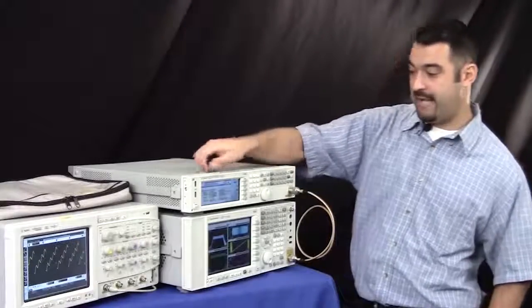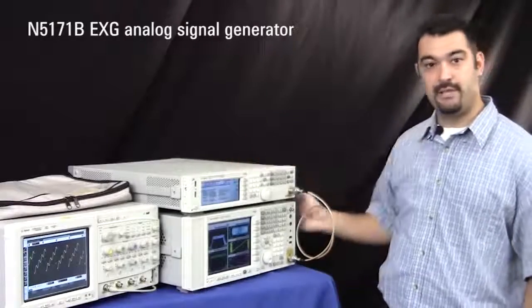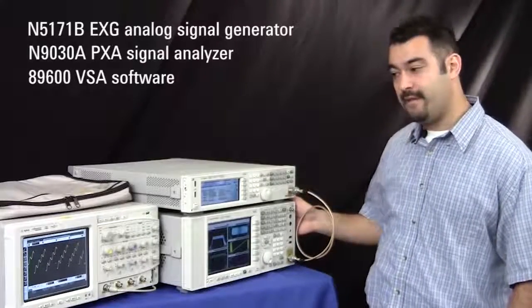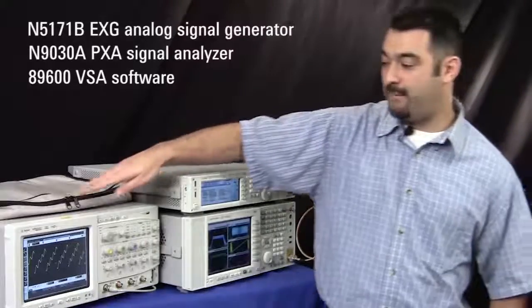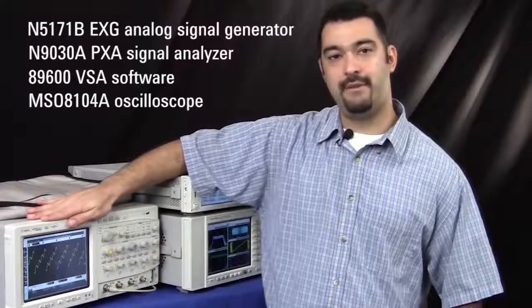In this setup today, we're going to be using the Agilent EXG analog signal generator. And to view the signal, we're going to be using the PXA with our VSA software embedded. And to look at our low-frequency output, we're going to be using a scope to illustrate our two-tone capability with our LFL.